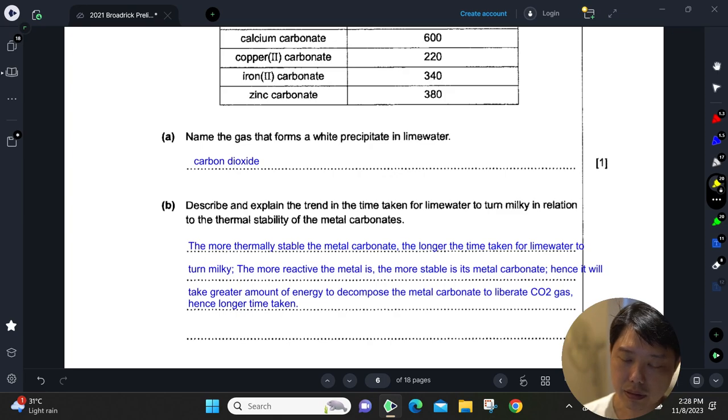If you look at the table, the more thermally stable the metal carbonate, the longer the time taken for the lime water to turn milky. But the more reactive the metal is, the more stable the metal carbonate will be. You take more energy to decompose it, so there's a longer time taken.